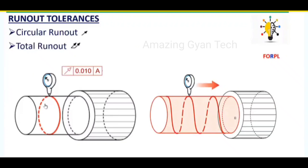Just by looking at the drawing we will get some idea. For circular runout it is like circularity — to easily differentiate, in circularity we were measuring the roundness of a circular cross section. Similarly, in circular runout we check the runout of the feature at any given cross section, at only one particular point. Whereas in total runout it is like cylindricity, where we measure the roundness throughout the entire surface of the feature — from the beginning till the end.